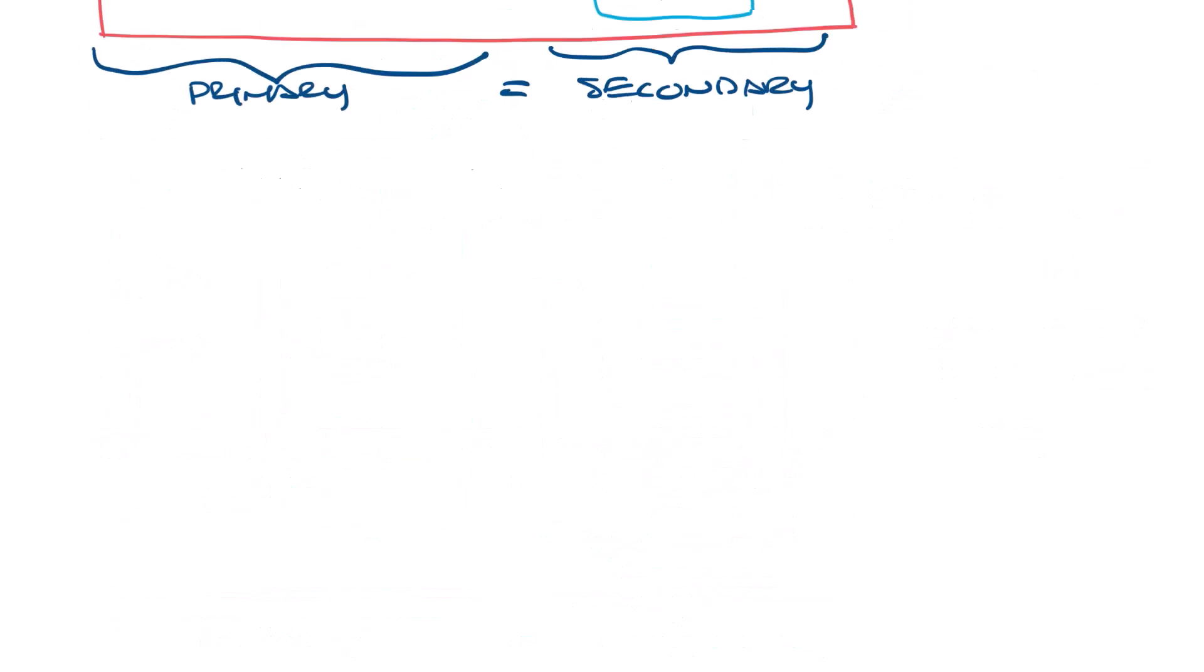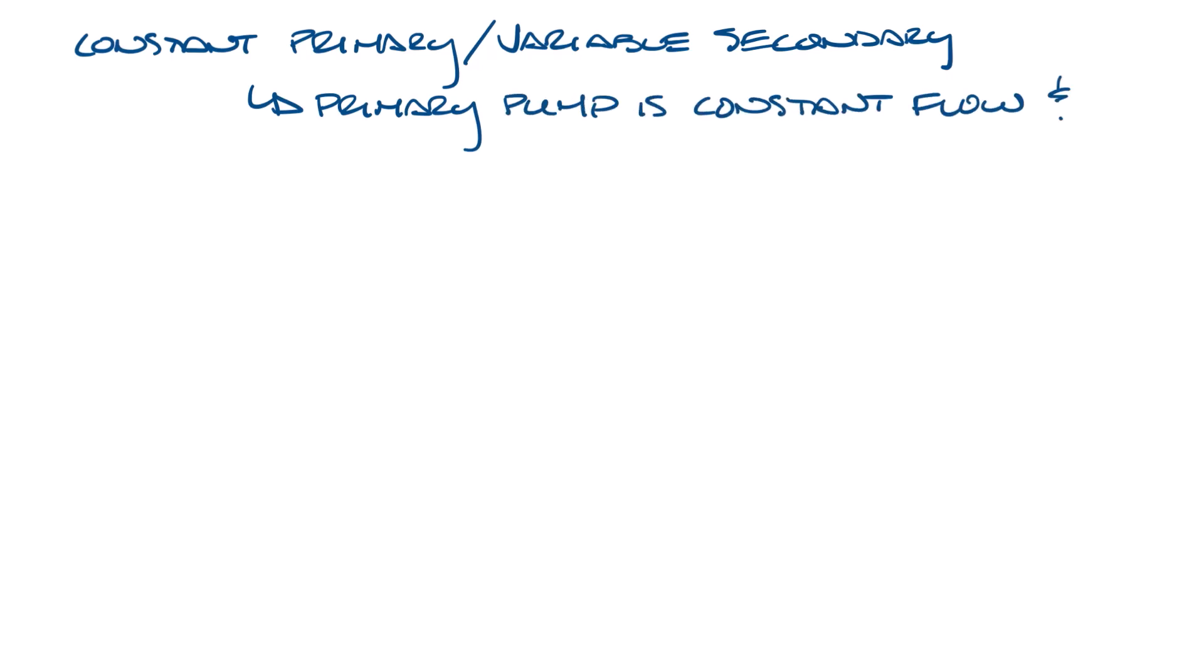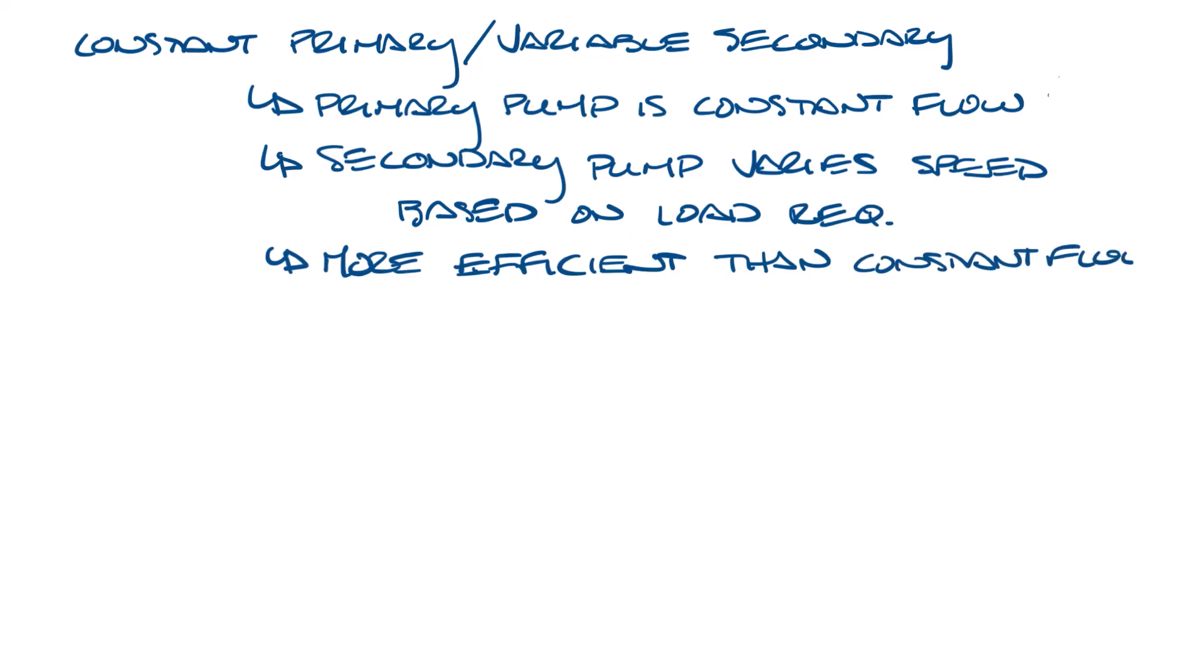So let's move this over and look at the constant primary variable secondary circulation system. This is often called primary secondary system. The primary pump is running at constant speed, but the secondary pumps are varying their speed based on load requirements. With the secondary pump being variable, the system is more efficient than constant flow systems, since the secondary pump only uses required energy to meet the system demand.